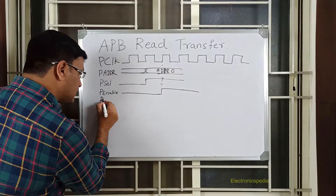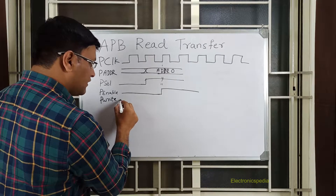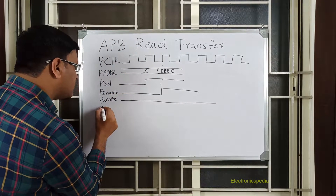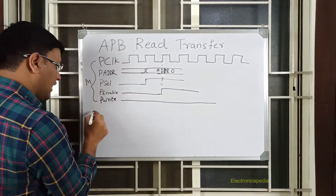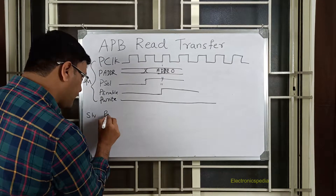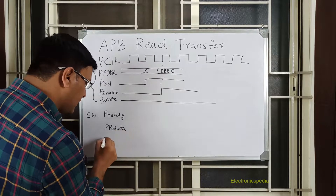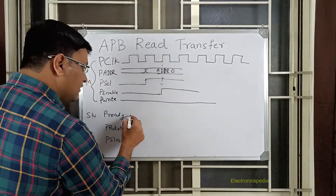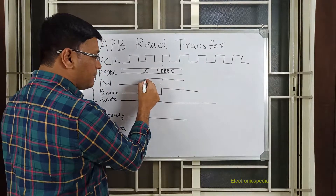The next signal is PWRITE. PWRITE should be zero because we are doing a read transfer. This is a read operation. These are the signals which are asserted by the master. Then at the slave side comes the signal called PREADY, and then we have PRDATA which is the read data, and then PSLVERR.